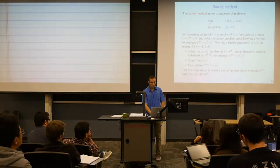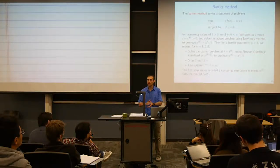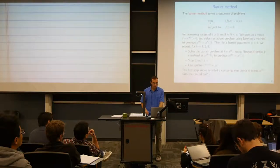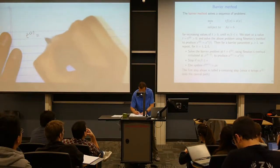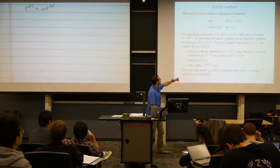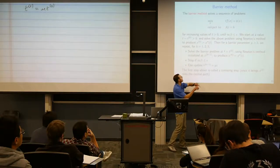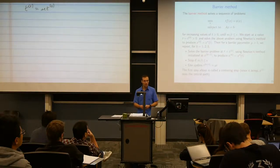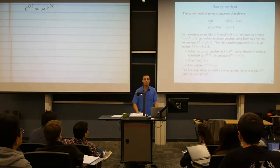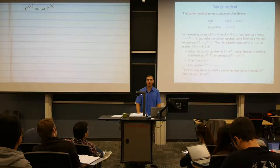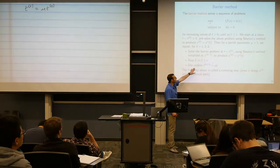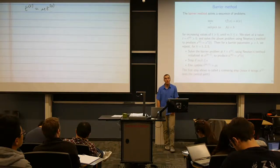We call x0 the solution to that problem. We define μ as the barrier parameter — the factor by which we multiply t at each step. Then we repeat: set t1 = μ·t0, solve the barrier problem at t1 with Newton's method starting from x0, and produce a new estimate xk. We check whether the duality gap m/t is ≤ ε. If so, we quit with a guaranteed suboptimality of ε; otherwise, we update t and repeat.